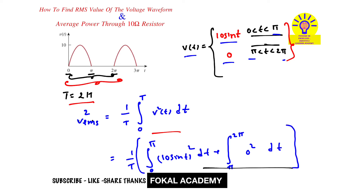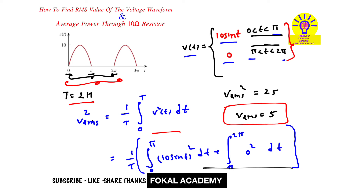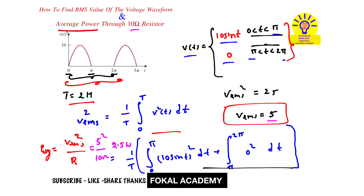By simplifying, we get V_rms² = 25, so V_rms = 5 volts. This is the RMS voltage for the given problem. Now for average power: P_average = V_rms² / R = 5² / 10 = 25 / 10 = 2.5 watts. This is the average power for the given problem.